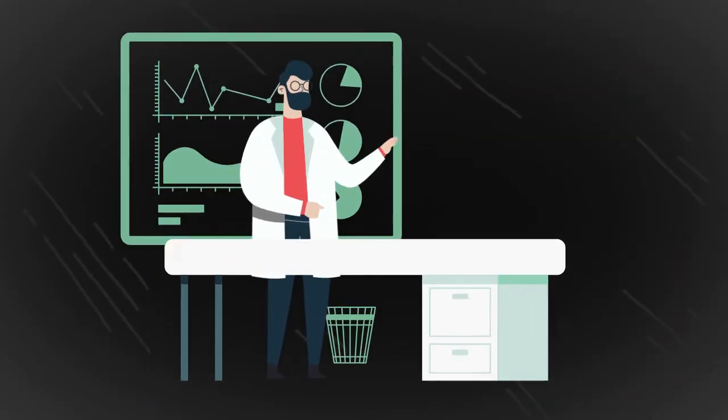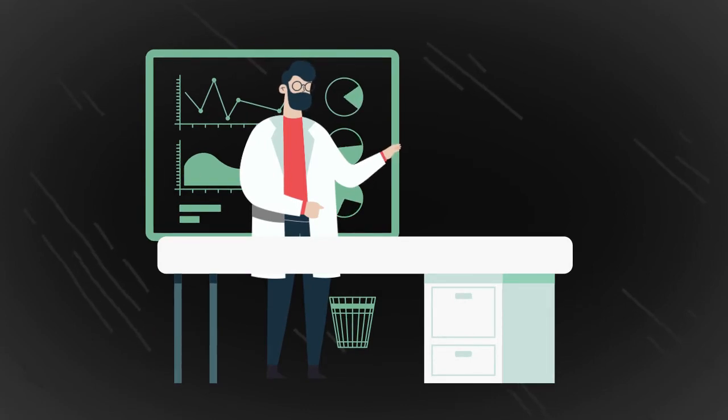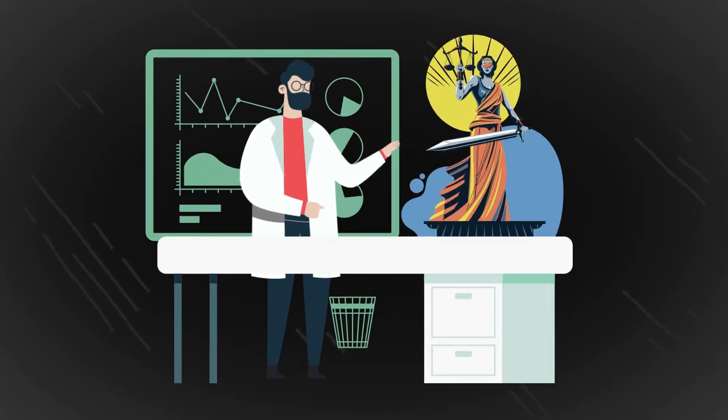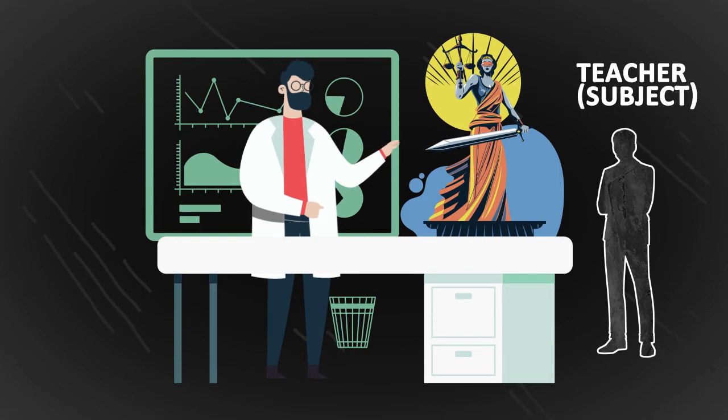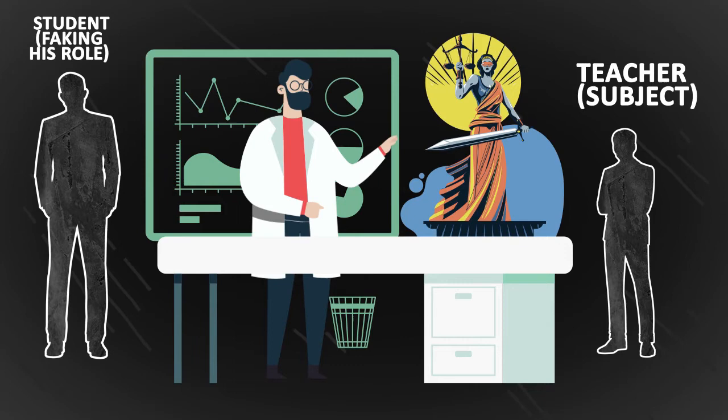All of this creates a setting that gives the experimenter a place of authority for the subject, who is the teacher, so that they would execute his orders. And, of course, the student is only faking the reactions as he was trained to for his role, to simulate being shocked.